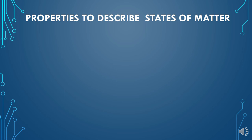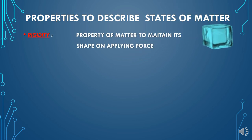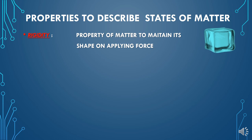On the basis of properties, we can describe these three states of matter. The first important property is rigidity. Rigidity means that if we apply force on a substance — for example, an iron block or a wooden block — no matter how much force, hammer, or pressure you apply, you are not able to change its shape. You can break it, but you cannot change its shape. This property of matter to maintain its shape on applying force is called rigidity.